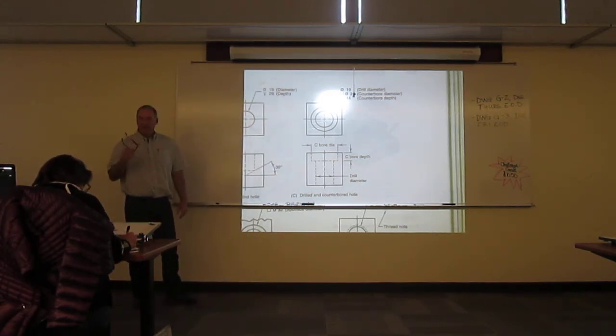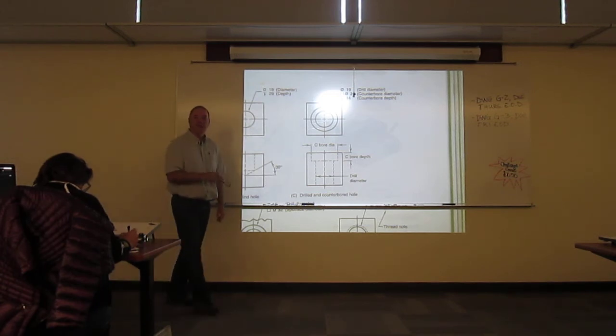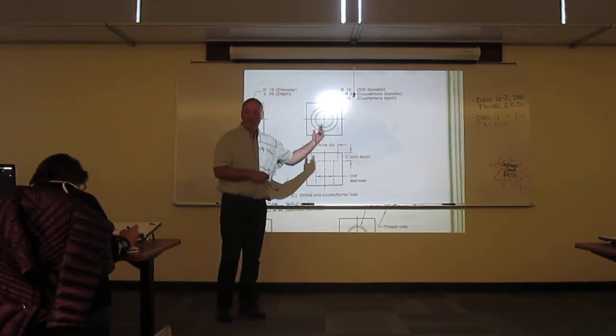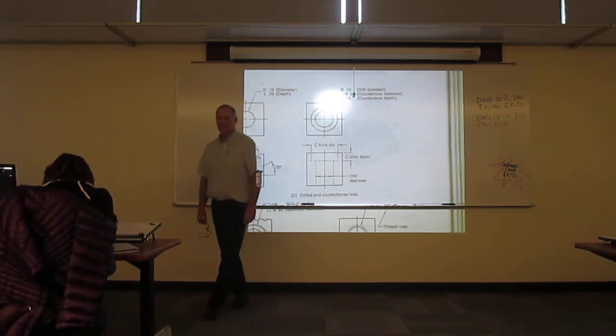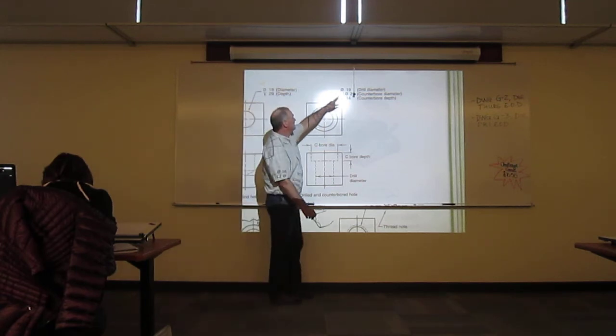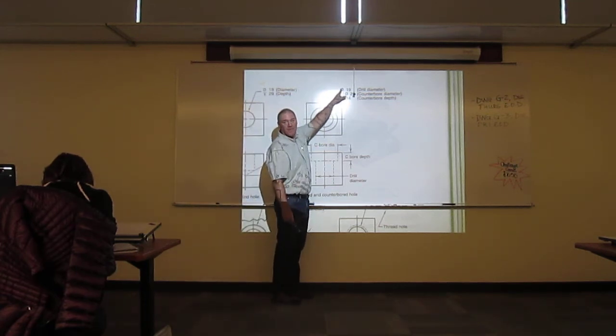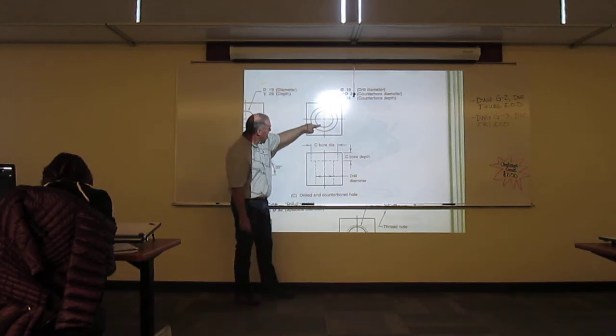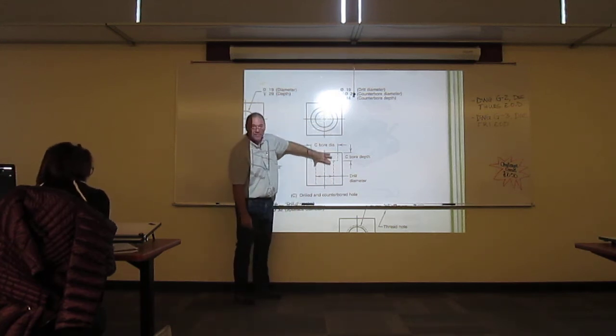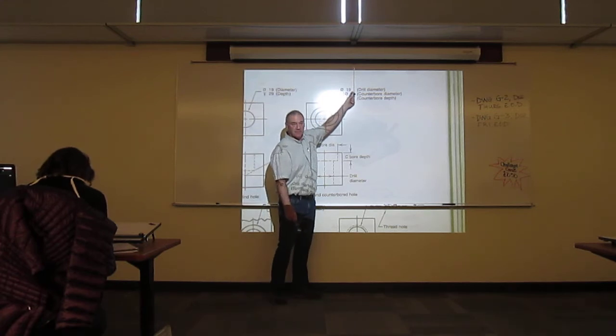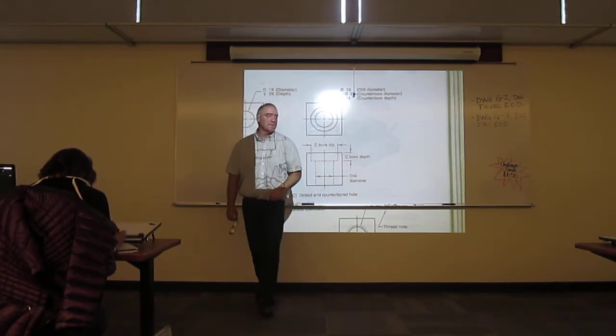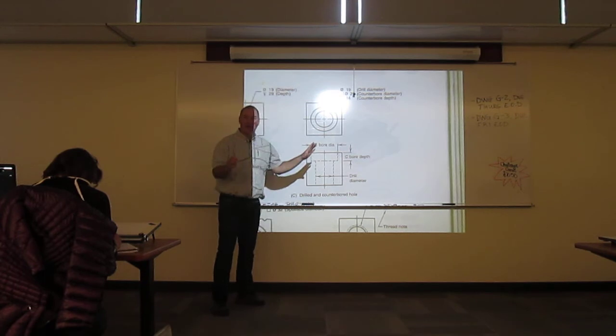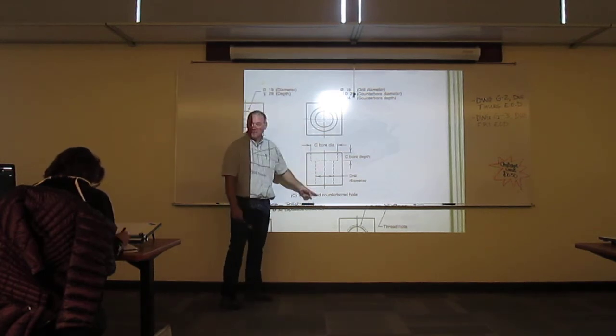The dimension itself will tell you all the information you need to know to draw a counterbore. This is an example of the dimension that will go with it. The first diameter that's given right here is diameter 19. That's your main hole. That's this small one right here, and it's this one. Notice that there's no depth given. It's a through hole. Can you put depth here and do a blind hole? You bet, if the part required it. Don't get shocked if you see a depth on that. All it is is a blind hole instead of a through hole.